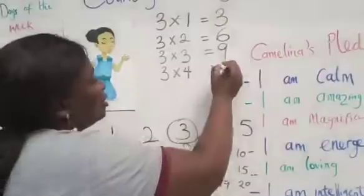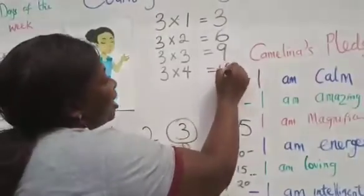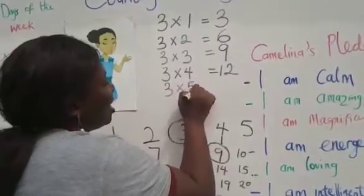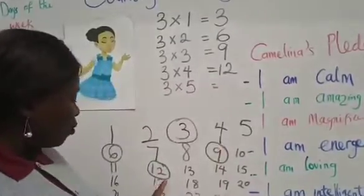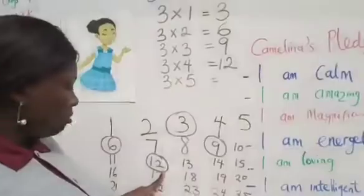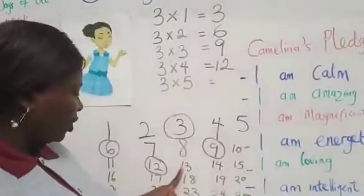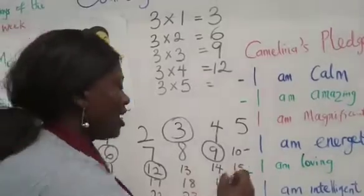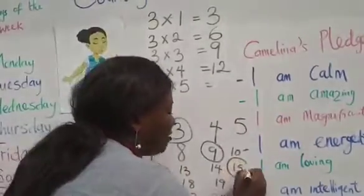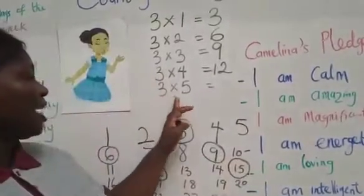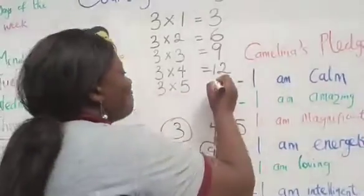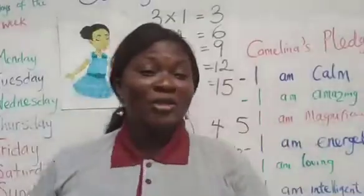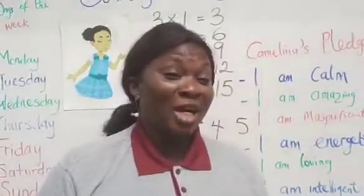Three times four gives us twelve. Now we have three times five. We'll start counting our three places from thirteen: one, two, three — and we circle fifteen. So three times five gives us fifteen.